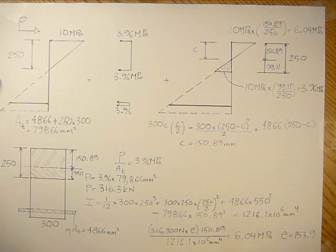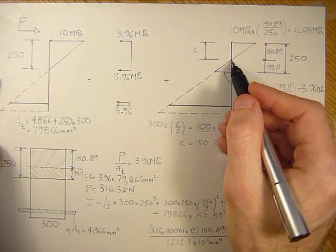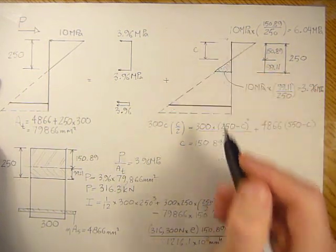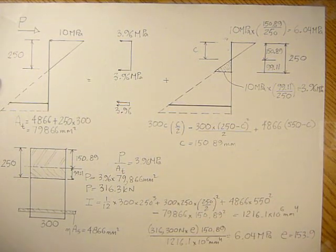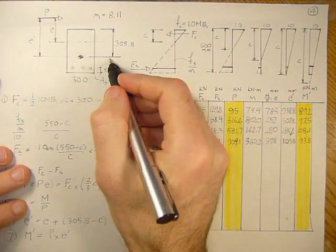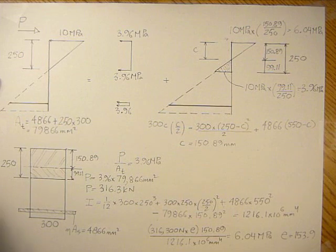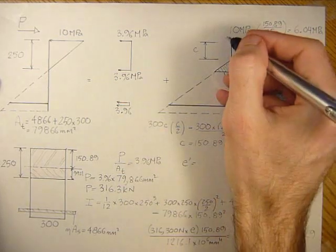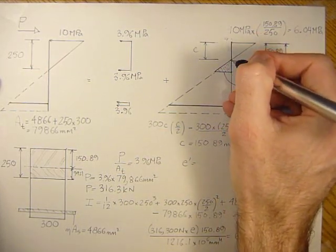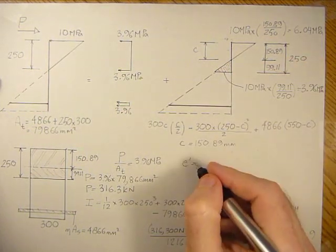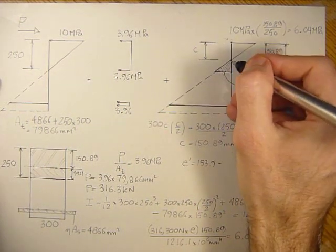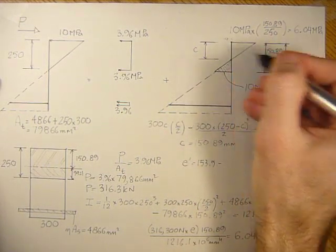Now that e is relative to this neutral axis here, so from here up to somewhere around here is where P would be. But we want to find the e relative to the gross neutral axis which is at 305.8. To find e prime, it's going to equal 153.9 minus this distance here, 150.89.